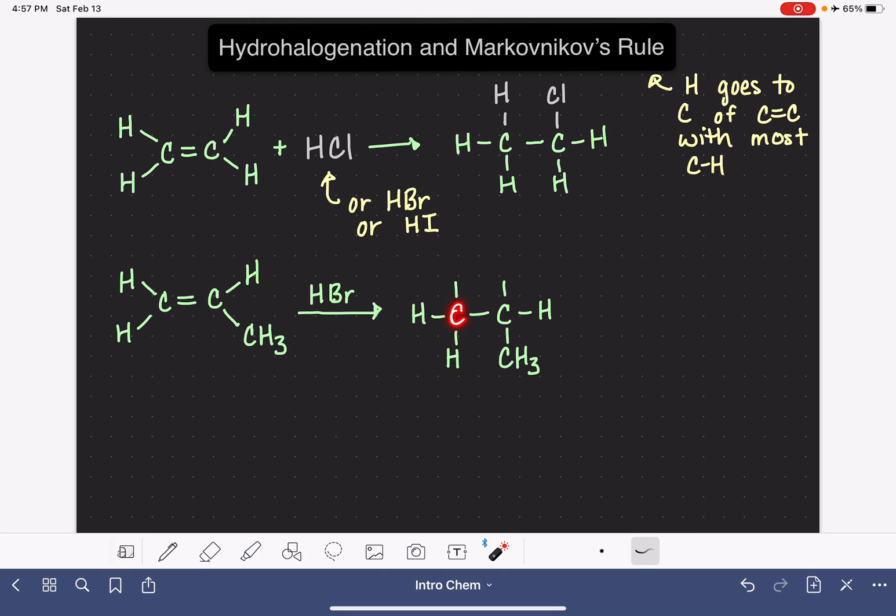This carbon atom right here has two carbon-hydrogen bonds. This carbon atom right here has only one. Remember, we're only counting the carbon-hydrogen bonds that are attached directly to the two carbons of the alkene. So these hydrogens down here don't count.